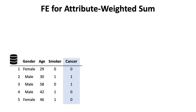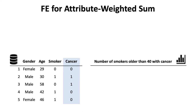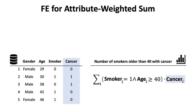Consider a database with four fields or attributes. Each record in the database corresponds to a particular person. It contains some demographic information such as gender, age, and whether he or she smokes. It also contains some sensitive information of whether he or she got cancer. With this toy database, we may want to count the number of smokers who is older than age 40 and got cancer.